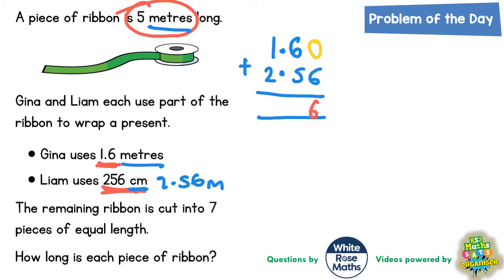Then add them up. 0 add 6 is 6, 6 add 5 is 11, 1 plus 2 plus 1 is 4. So Gina and Liam are using 4.16 metres of ribbon.